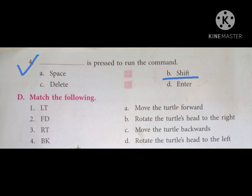Number four: Dash is pressed to run the command. A. Space, B. Shift, C. Delete, and D. Enter. So we know that to run the command we have to press the Enter key or the execute button on the Logo screen, so the answer is number D, Enter.